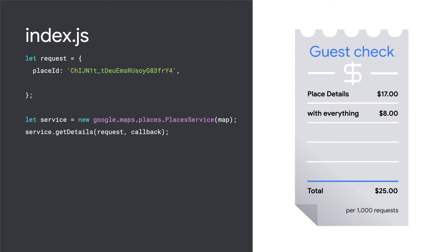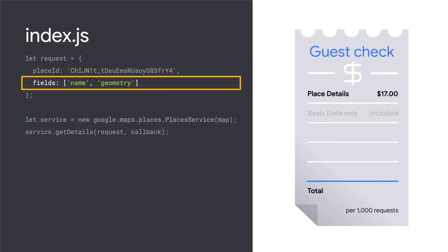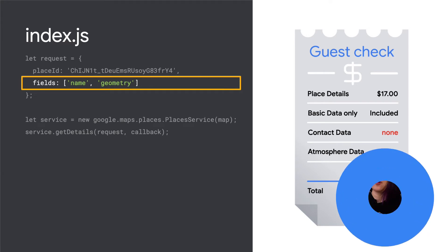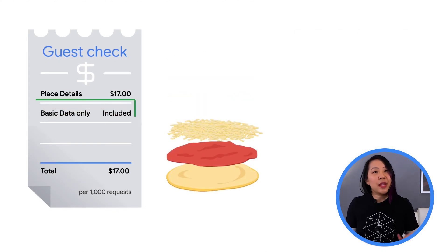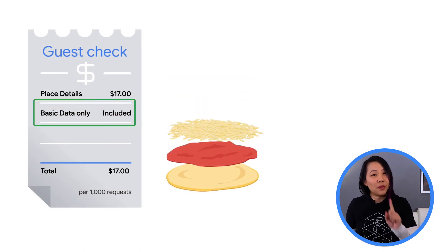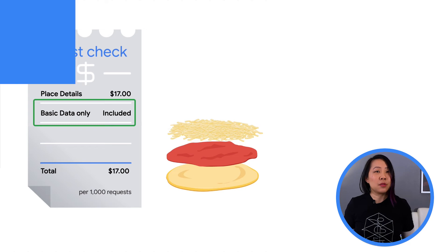The key is to add the Fields parameter to specify exactly which details you want. This is like telling the server that you want a plain cheese pizza instead of a combo. If all you need is basic data, that's a 32% savings just by adding one parameter to your code.